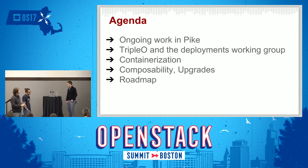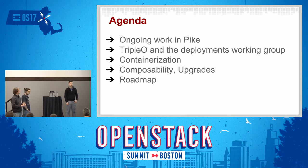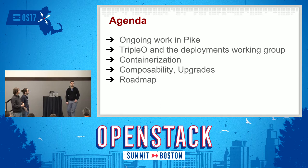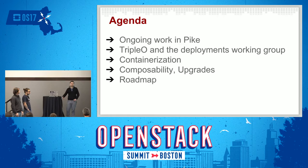So the agenda: we start with what's going on in Pike and what we are doing. The cycle is not finished yet — we're in the middle. I'll give an overview of what we are doing, what we already did partially, and what we aim to finish in Pike. Then I'll give an update on what's going on in the deployment tooling in OpenStack, mentioning things that TripleO is working on with other projects — how we collaborate in the OpenStack community to make deployments better.